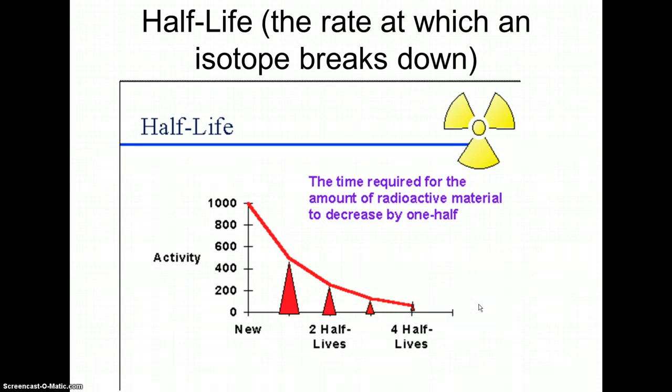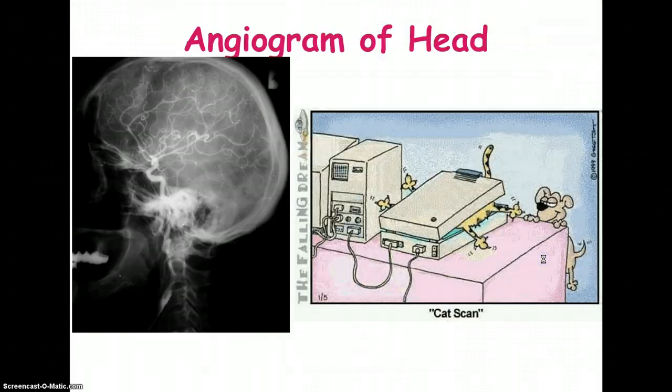And that's the reason why, for example, carbon 14 wouldn't be good for dinosaur bones because it's not that there wouldn't necessarily be any more, but the amount that was left would be such a tiny amount that it just wouldn't be enough to really be useful.